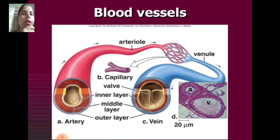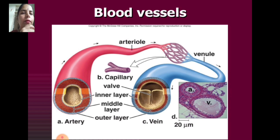Arteries are blue in color and red color is the arterioles. Capillary valve inner layer, middle layer and outer layer. A is the artery, B is the capillary, and C is the vein.